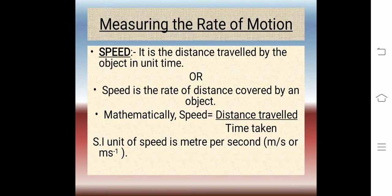Measuring the rate of motion. We know that different objects may take different amounts of time to cover a given distance. Some of them may move fast and some move slowly. The rate at which objects move can also be different, but different objects can sometimes move at the same rate. One of the ways of measuring the rate of motion of an object is to find out the distance travelled by the object in unit time. This quantity is referred to as speed.